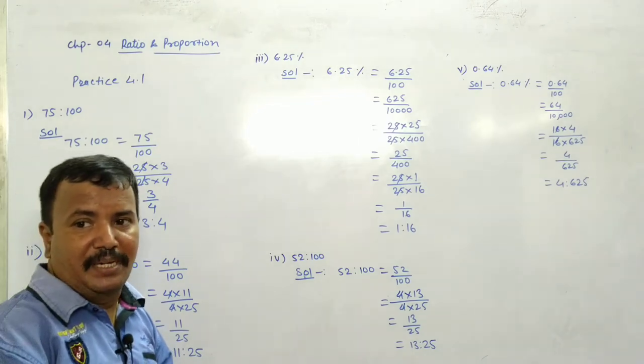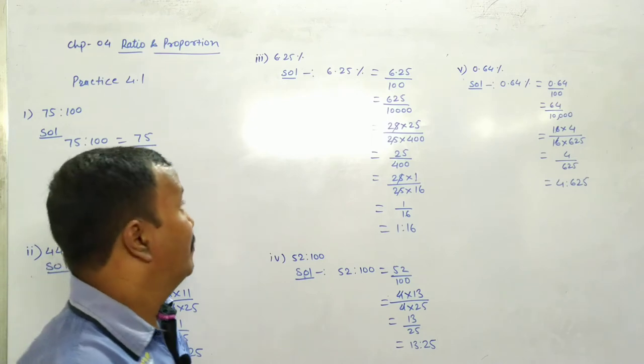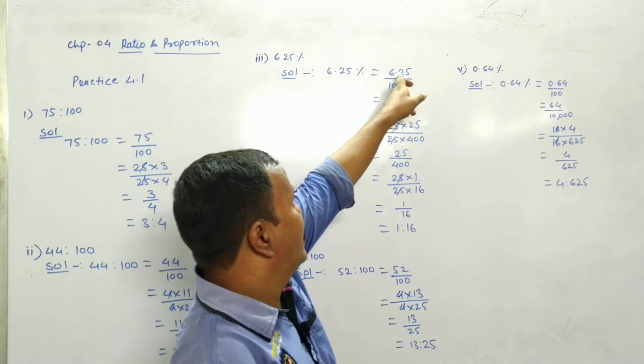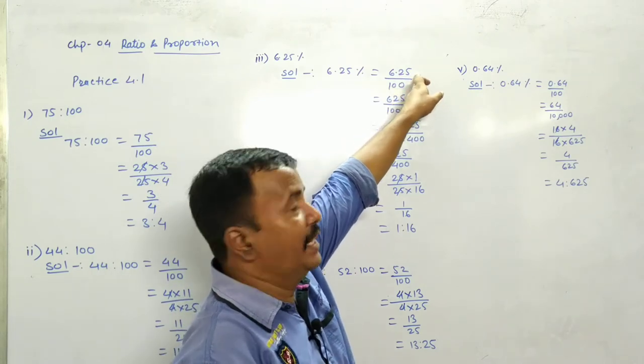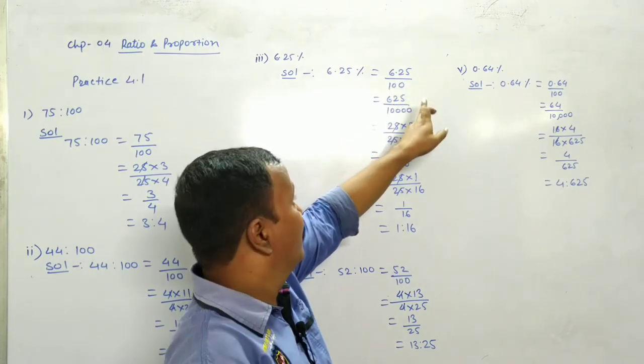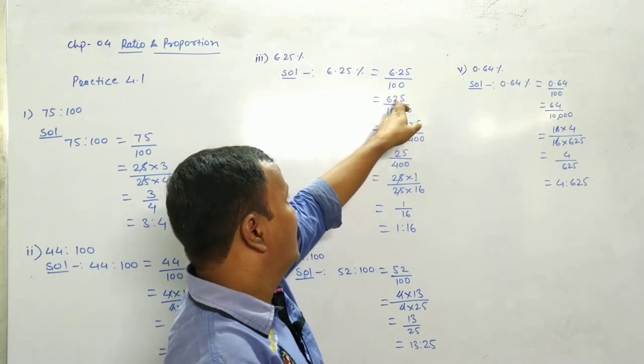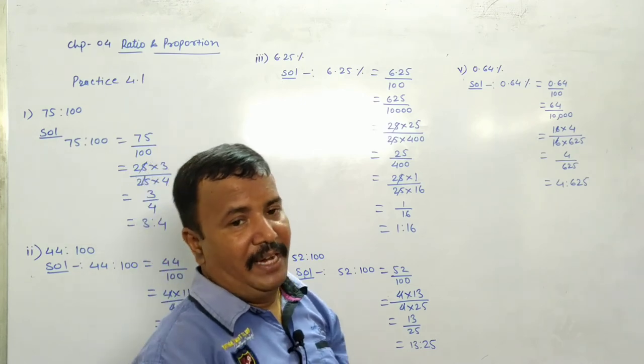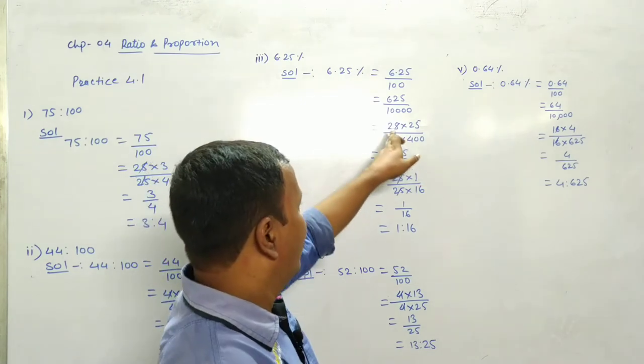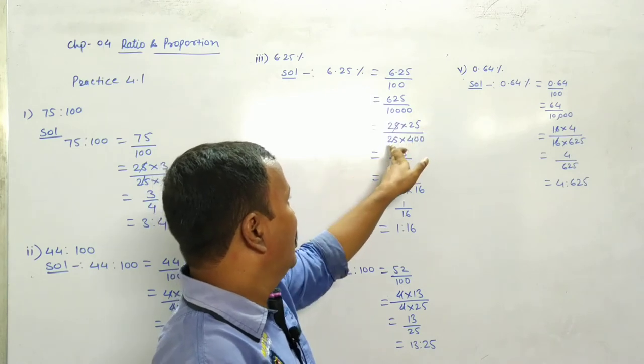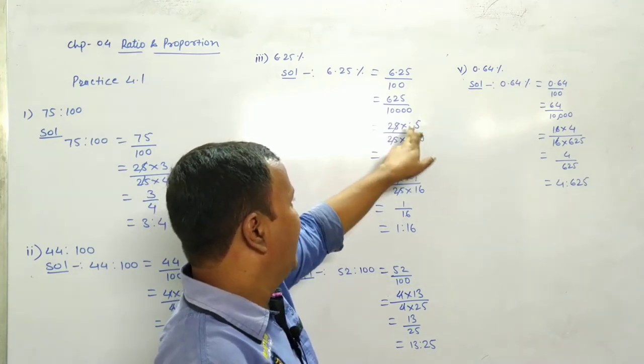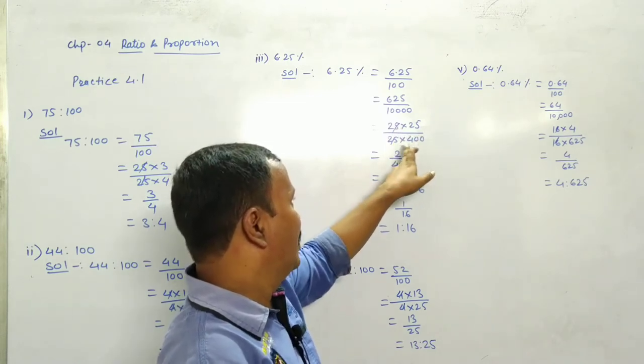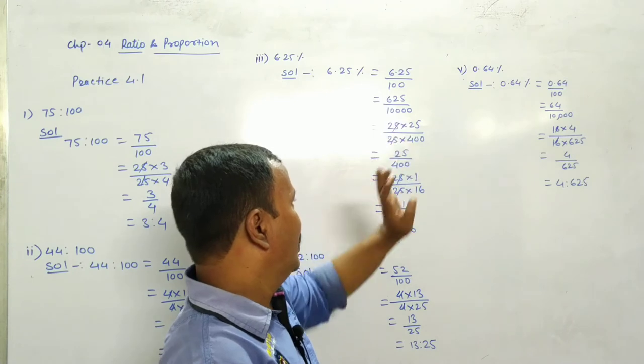Third one. 6.25 percent. Means 6.25 divided by 100. To remove the two decimals, multiply by 100 here. So obviously here also. What will get? 625 divided by 10,000. Now 625, 25 ka square hai. 25 into 25.